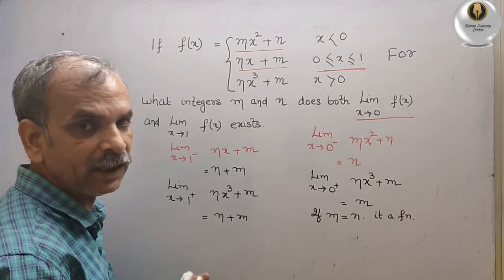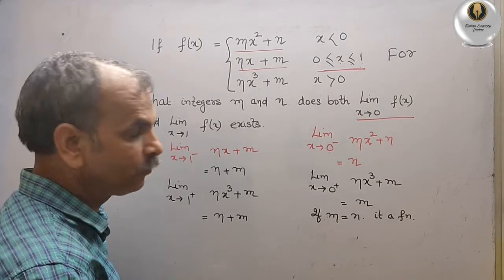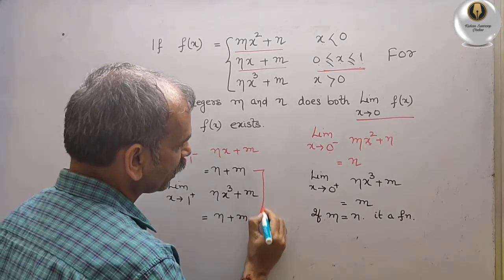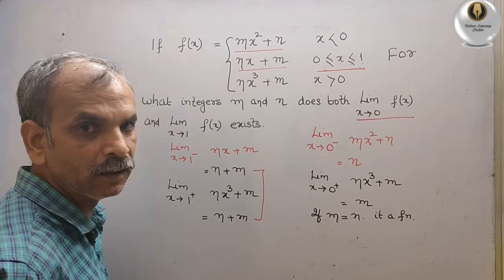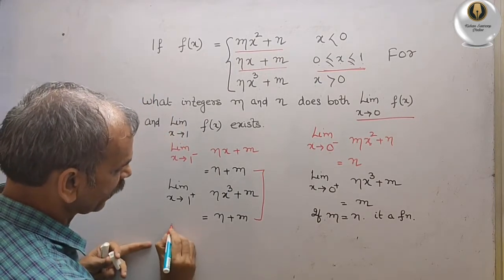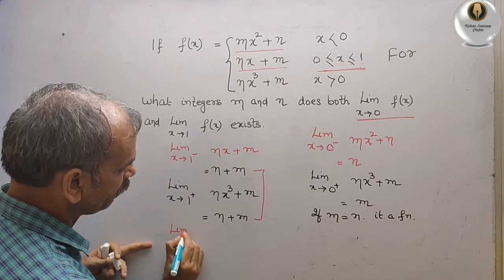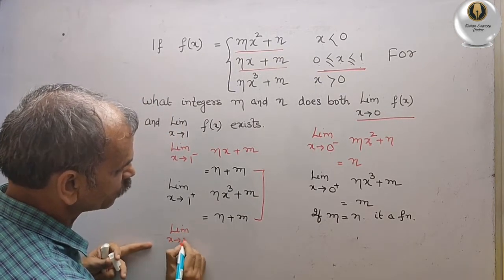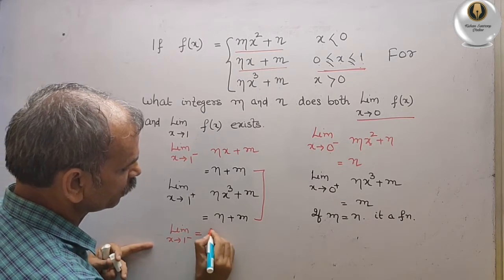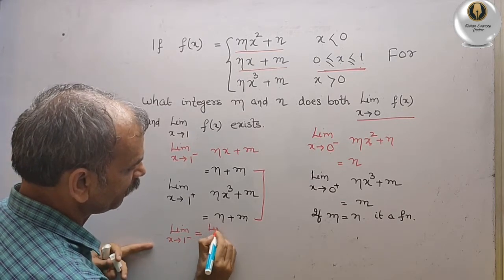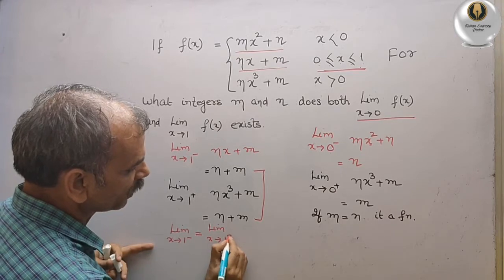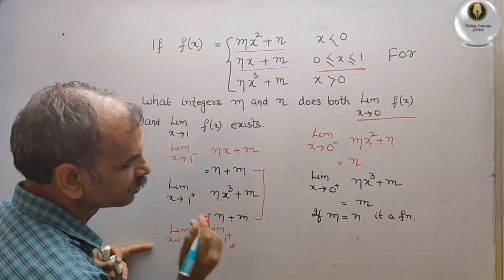Here you can see both values are equal: the limit as x tends to 1 minus equals the limit as x tends to 1 plus, both giving n + m. So the limit at x = 1 exists for any integers m and n.